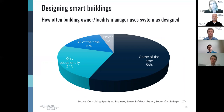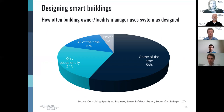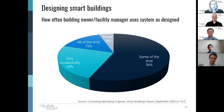We asked a similar question about how frequently an owner or facility manager is actually using those systems as designed, and it wasn't as high as we thought it would be. 'All of the time' was only 15%. So the designs, the systems, the products being placed into these buildings are not being used as originally designed. 'Some of the time' turned out to be 56%, which is pretty good — but what does that mean? Does that mean building owners or facility managers are overwhelmed? Does that mean they don't understand the data?